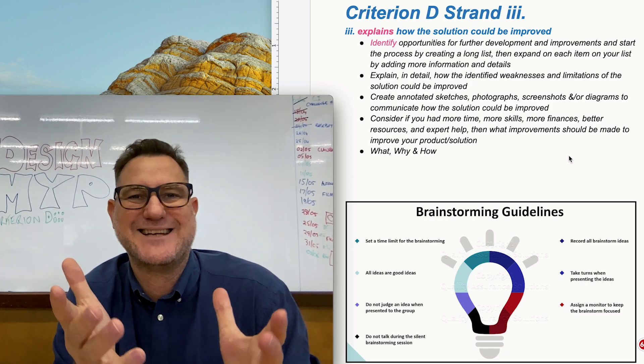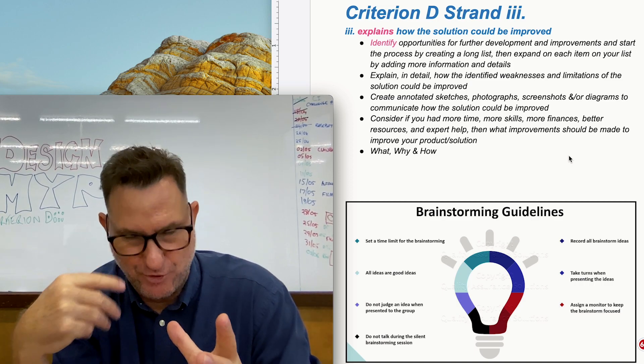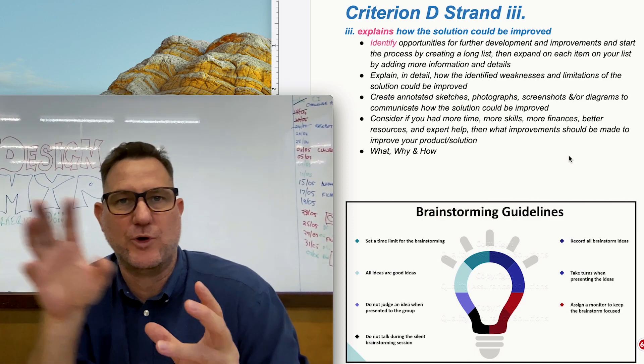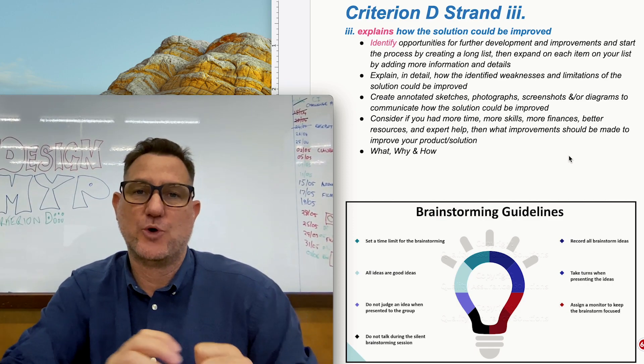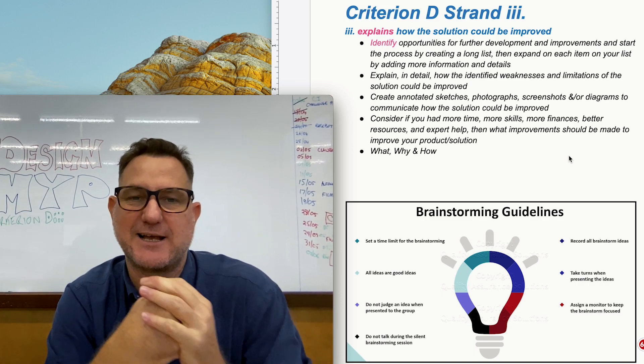So it actually doesn't take much skill to say this item here could be better, but it takes a lot more thought and even a bit of research to actually identify how it should, this is what it is now, what you should change it to to make it better and some of the reasons why or justifying exactly why.